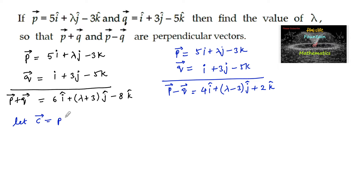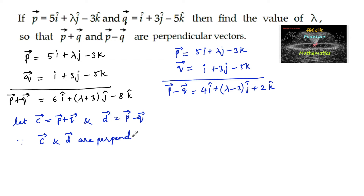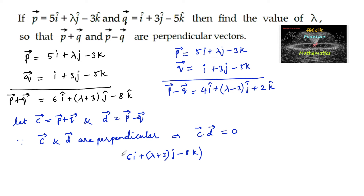Let vector c = p plus q and vector d = p minus q. We need to find the value of λ so that p plus q and p minus q are perpendicular. Since vector c and vector d are perpendicular, the dot product equals 0. So the dot product is: (6i + (λ+3)j - 8k) · (4i + (λ-3)j + 2k) = 0.